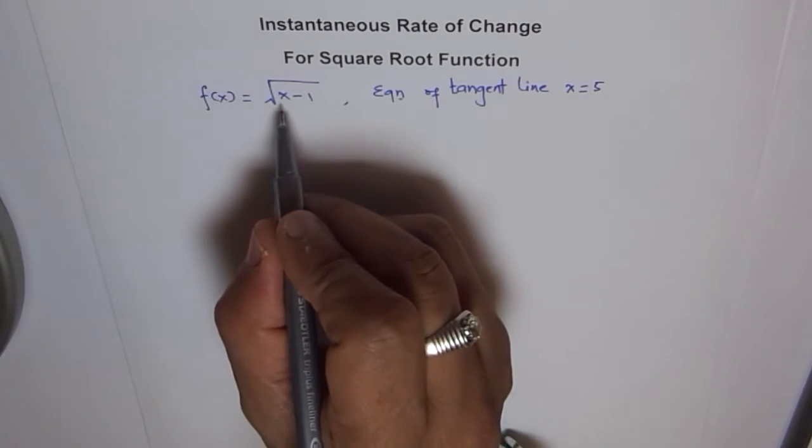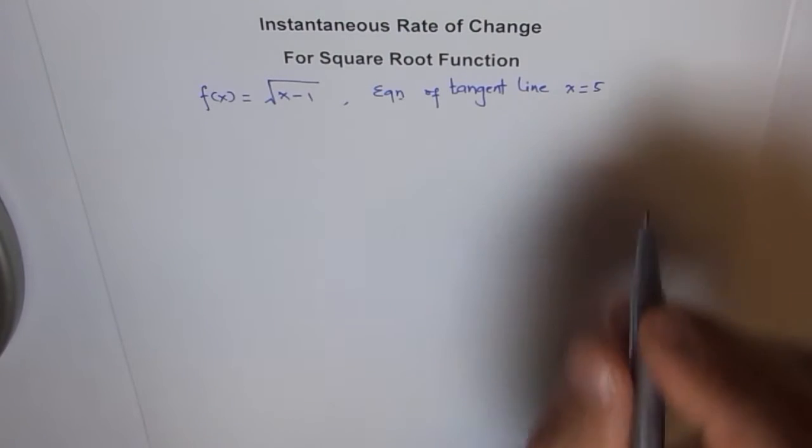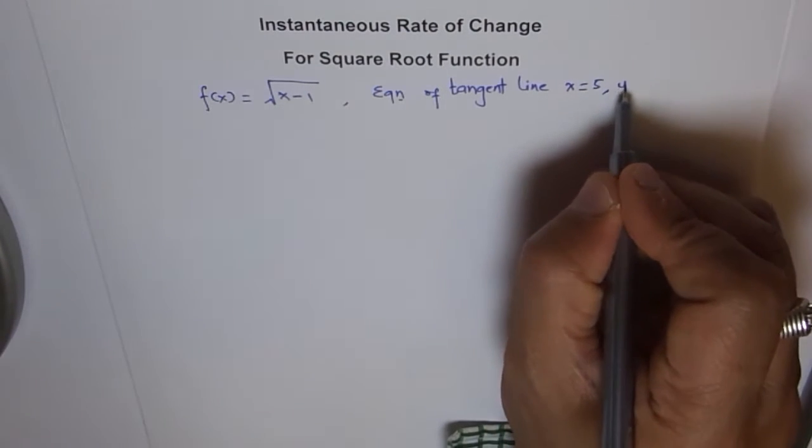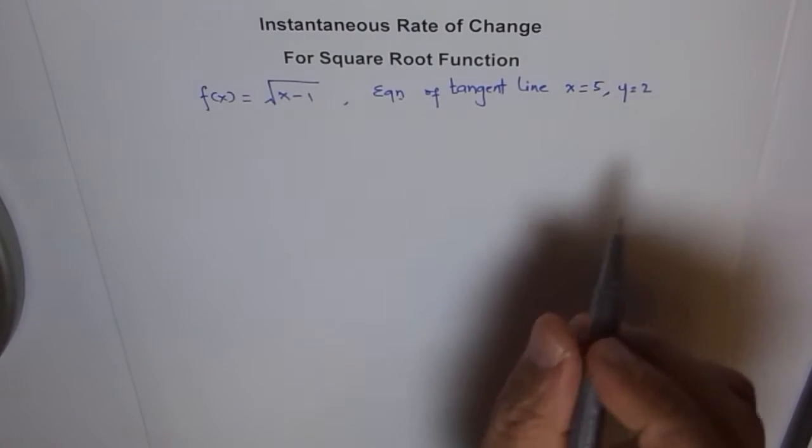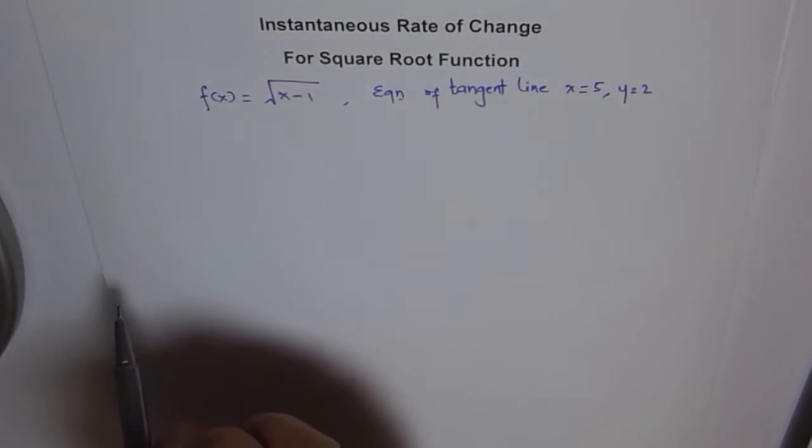If x is 5 here, then 5 minus 1 is 4 and square root of 4 is 2. So x equals 5 and y equals 2 at that point. So let this be the problem now.